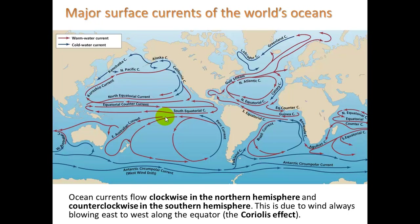We'll talk about this a little bit more in class, but it's related to the spin of the earth. If the earth were to suddenly stop and start rotating the other way, then these directions would all change — they would flip. And we see the same direction for the currents when we talk about air currents in our future unit.